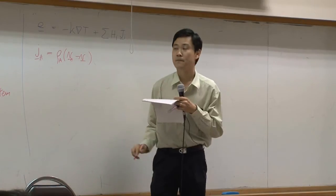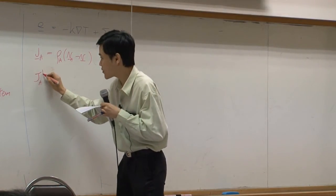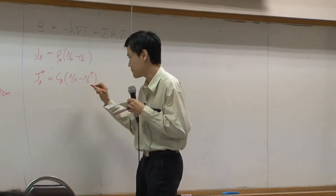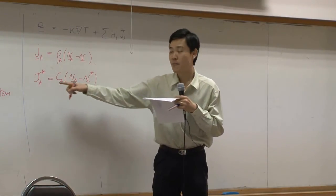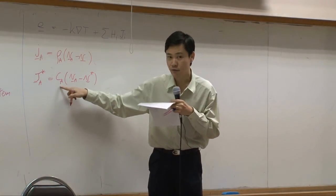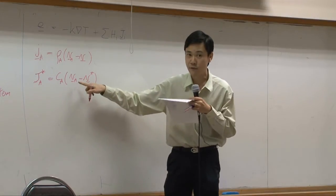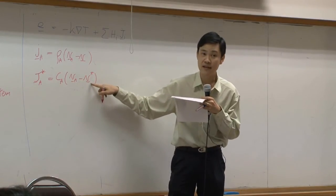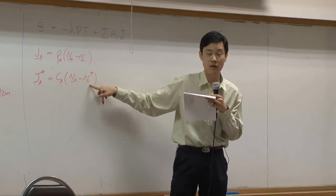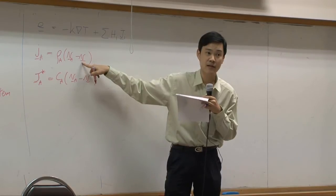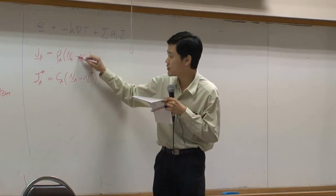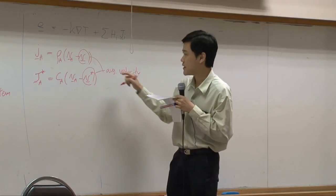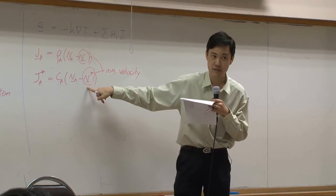We also have J_A star, which is C_A times V_A minus V star. This would tell you molar diffusion flux as a function of concentration, molar concentration, and how much faster A moves relative to average velocity. But average velocity in this case is calculated based on molar fraction. This one is calculated based on mass fraction. These two terms are average velocity. But this one is mass basis, this one is molar basis.